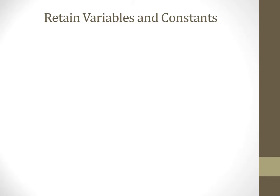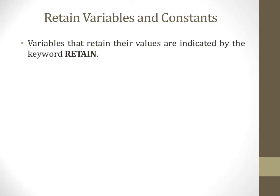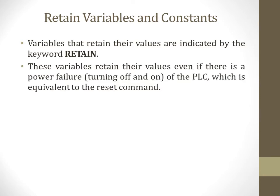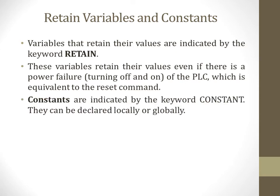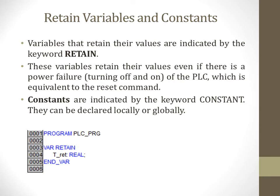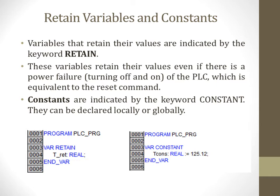Next we will speak about classification of variables. We have two types: retain variables and constants. Variables that retain their values are indicated by the keyword RETAIN. These variables retain their values even if there is a power failure — turning off and on of the PLC. Constant variables are indicated by the keyword CONSTANT and can be declared locally or globally.